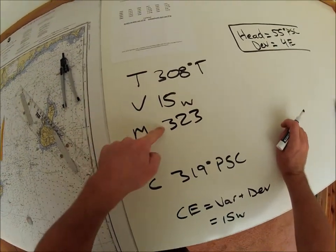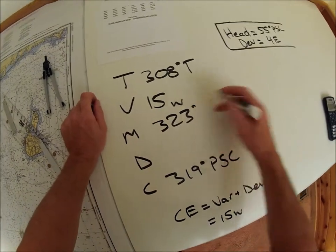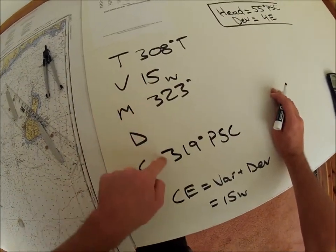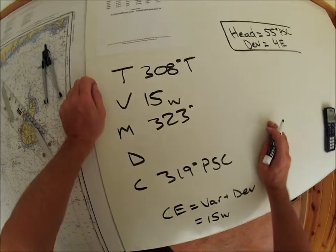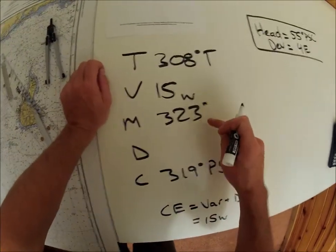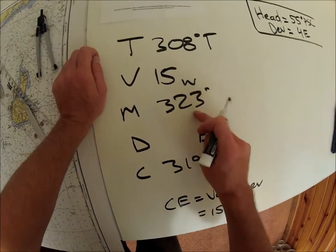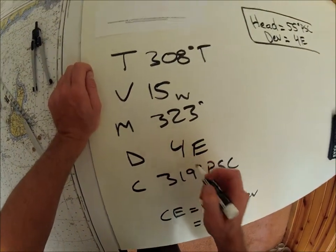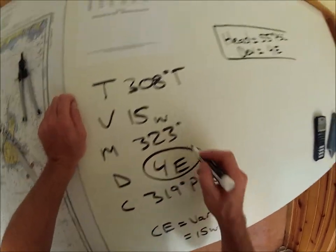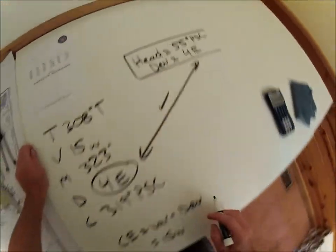Now, to get from 323 degrees magnetic to get from 323 to 319, what deviation do I need? I need to subtract, so it's got to be east. And from 23 to 19, it's 4 east. This is what I've calculated. Now look at this. It checks out. Check. That checks out.